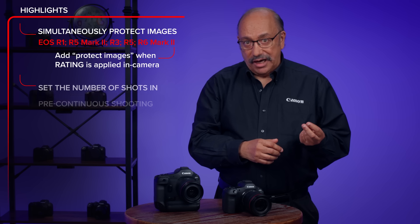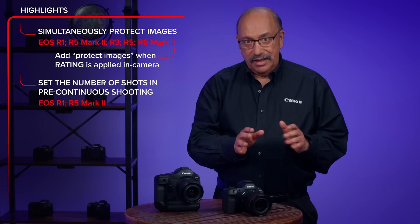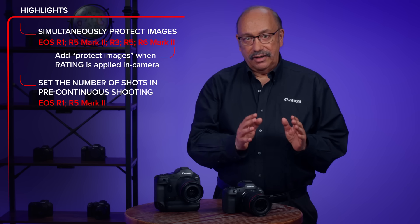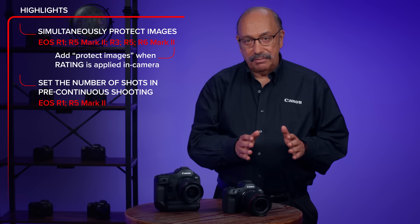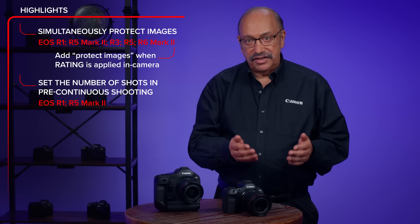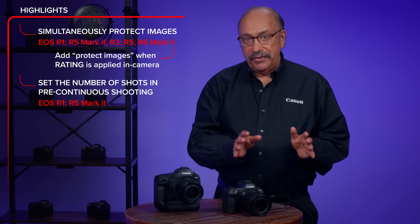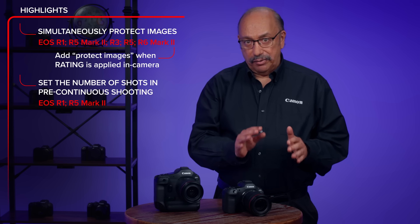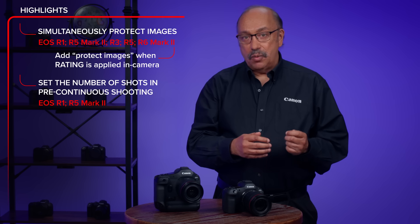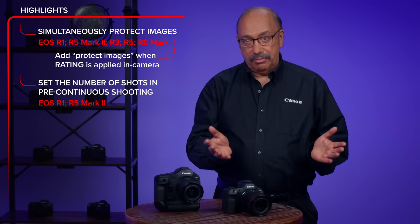Another new feature lets you set the number of shots in pre-continuous shooting. This adds a frequently requested feature to limit the number of still images in pre-continuous shooting. You can now dial down the number of pre-continuous shots to as few as one image recorded before the shutter button is fully depressed.